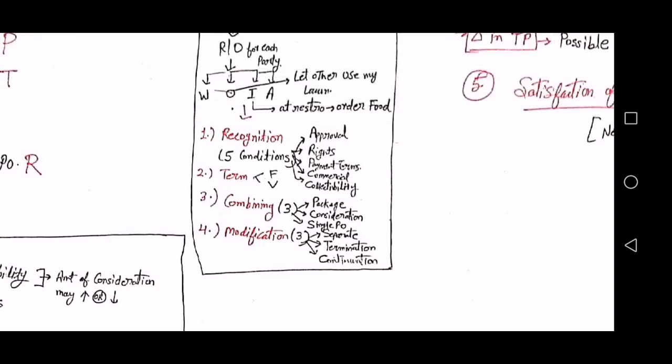Contract terms can be fixed or variable. A fixed term contract is like a six-month or nine-month contractual job. A variable contract example is when you buy services for 12 months but have an option to cancel after three months — in that case, the contract term becomes three months.